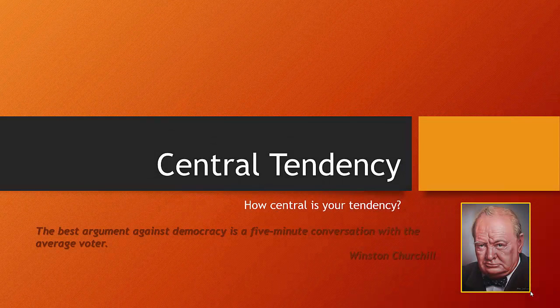Welcome back students. Now that we have an understanding of the distribution of our variables and the different levels of measurement, we need to think about how we could summarize in a single number or statement what's going on with our variables. That leads us to discussions of both central location or central tendency and dispersion or variation. In this video, we're going to talk about just central location or central tendency, and in the video that follows, we'll talk about dispersion.